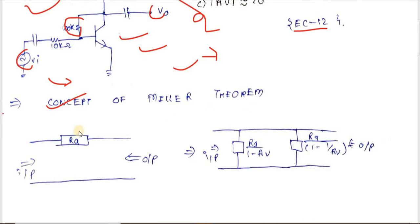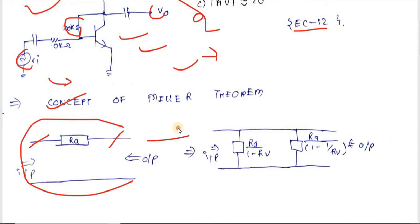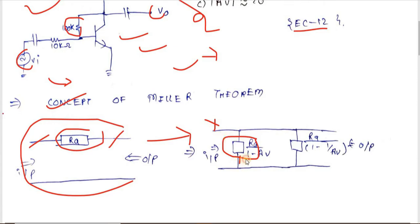Let's take a quick review of Miller's theorem. Whenever some impedance or resistance is present between the input and output port, you use Miller's theorem to resolve that impedance into two impedances — one on the input side and one on the output side.